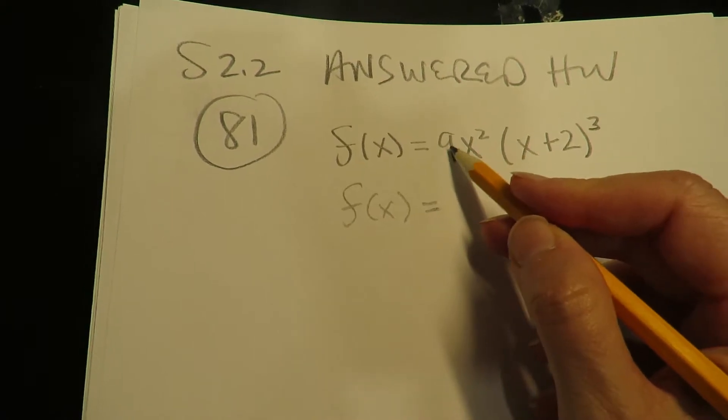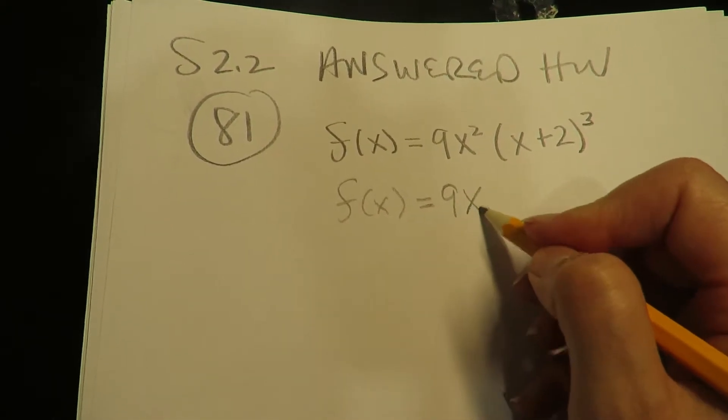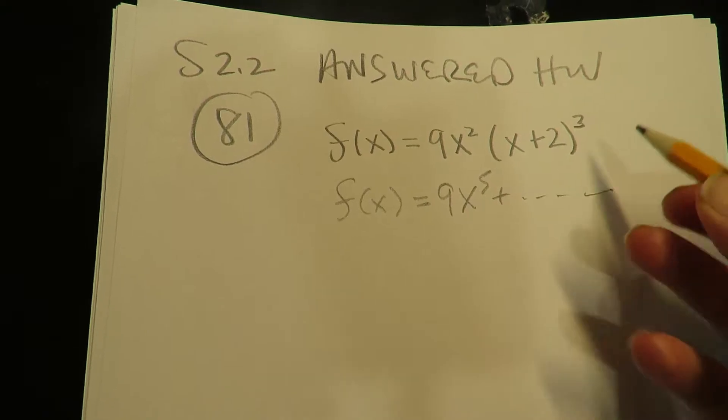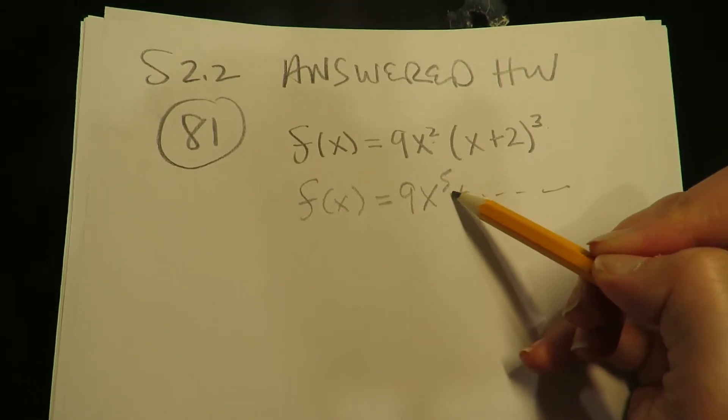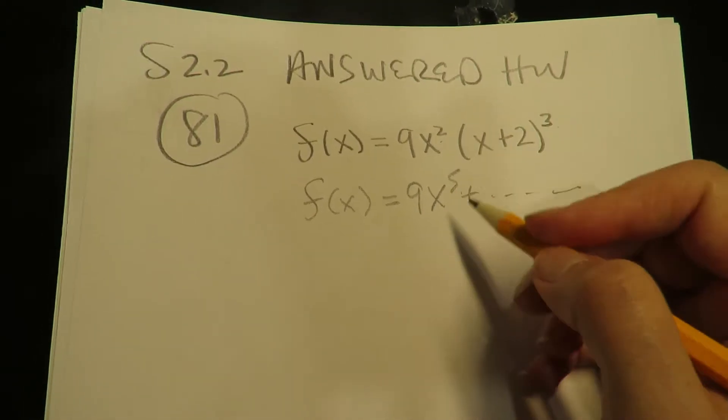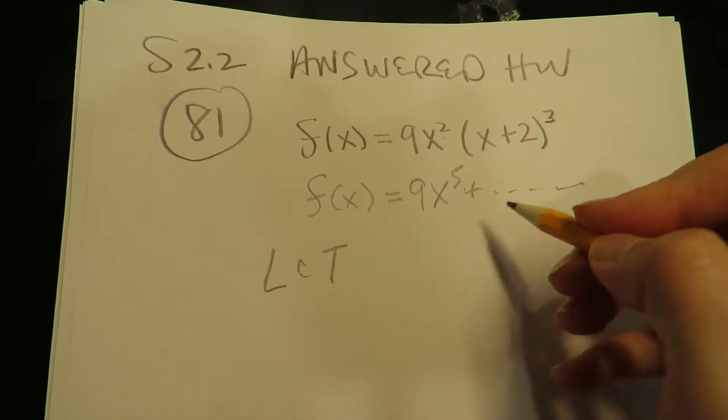The first term here would be 9x to the fifth, because you have a second degree and a third degree, and that would add together to a fifth degree. So for the leading coefficient test, a fifth degree is odd, so that's either going to be down-up or up-down.